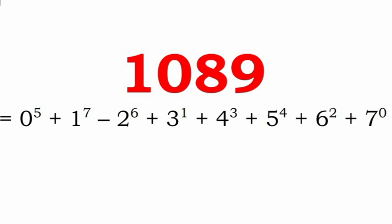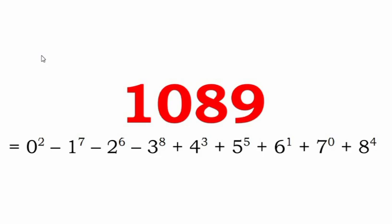Another representation of 1089 uses the digits 0, 1, 2, 3, 4, 5, 6, and 7 only, with all terms in power form and addition and subtraction present. We can write 1089 as 0 squared minus 1 to the power of 7 minus 2 to the power of 6 minus 3 to the power of 8 plus 4 cubed plus 5 to the power of 5 plus 6 to the power of 1 plus 7 to the power of 0 plus 8 to the power of 4. All the terms appear as a power of some digit, and the digits from 0 to 8 are used.